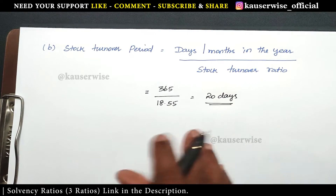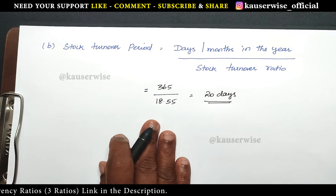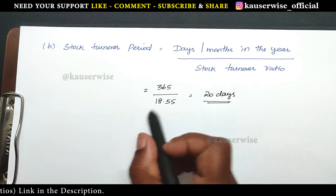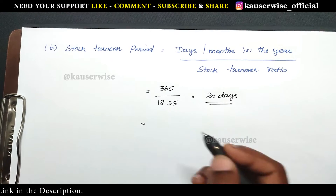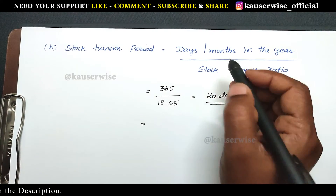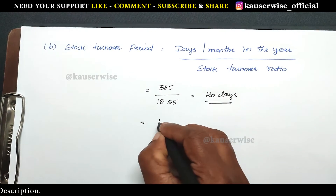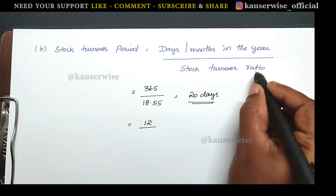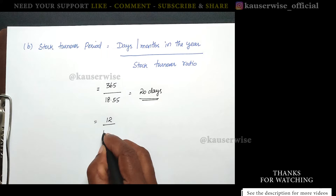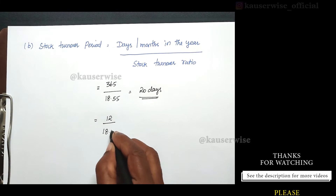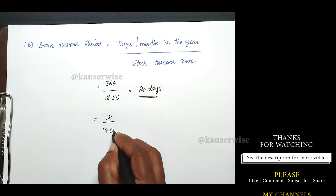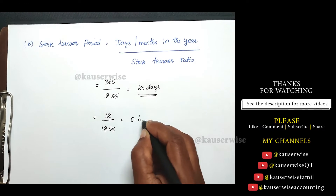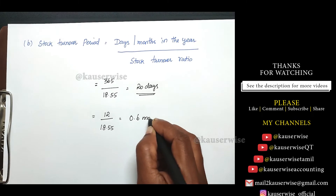The next one, we are going to find out the stock turnover period in months. How many months in the year? 12 months. So 12 divided by stock turnover ratio 18.55 times is equal to 0.6 months.